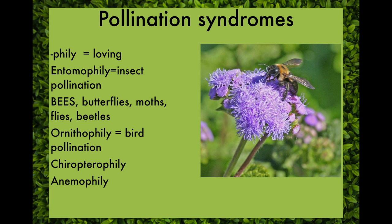Pollination syndromes all end in -phily for the technical terms to describe them. Entomophily is insect pollination in general — an entomologist is a person who studies insects. Far and away, bees are the main pollinators of flowering plants, but a number of other insects like butterflies, moths, flies, and beetles can also pollinate flowers.